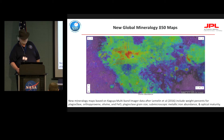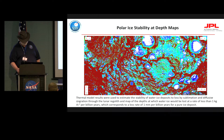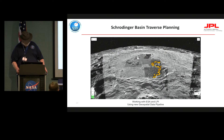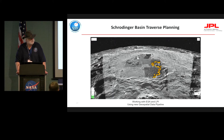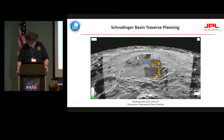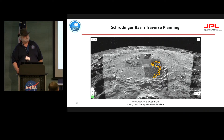We also have global mineralogy maps and polar ice stability at depth maps. We've been taking advantage of a new geospatial data pipeline we've developed to access the planetary data system, and we're using this to go back after the constellation regions of interest in great detail, as well as the potential landing sites identified at last January's meeting here at Ames — such as, as David pointed out, the Schrodinger impact basin.